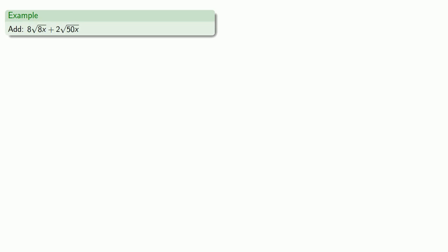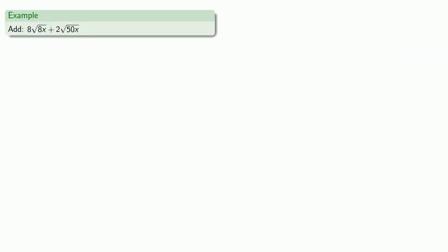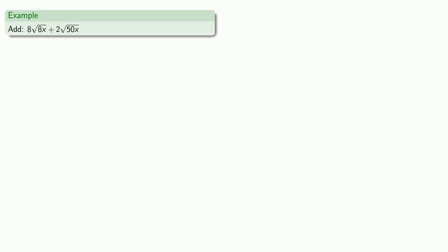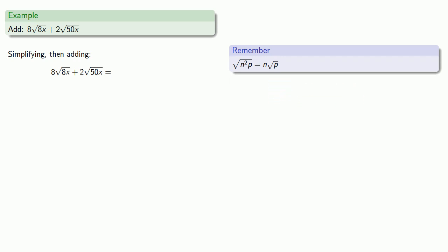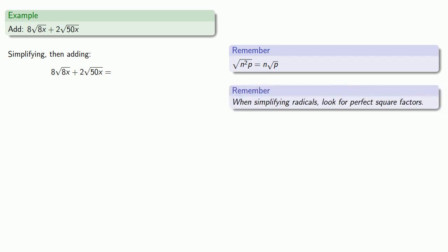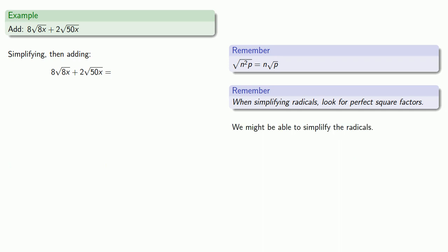How about 8 square root of 8x plus 2 square root of 50x? Since the radical expressions are not the same, we can't directly combine them — or can we? We might be able to simplify the expressions. Remember, the square root of n squared times p is n times the square root of p. So we might be able to simplify these, and it's useful to look for perfect square factors when simplifying radicals.